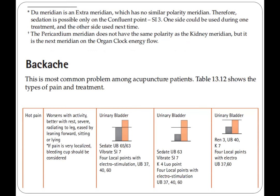The Du meridian is an extra meridian which has no similar polarity meridian; therefore, sedation is possible only on the confluent point Small Intestine 3. One side can be used during one treatment and the other side used next time. The pericardium meridian does not have the same polarity as the kidney meridian, but it is the next meridian on the organ clock energy flow.